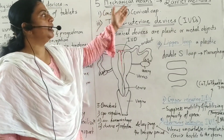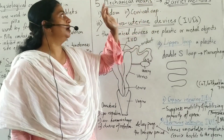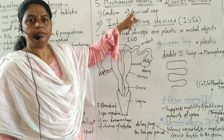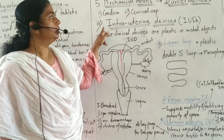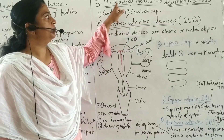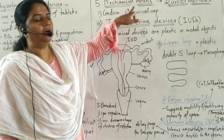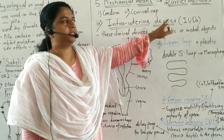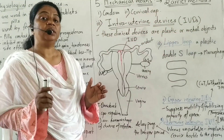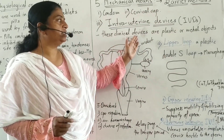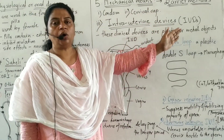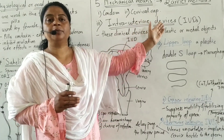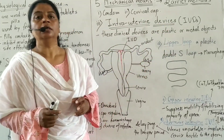The next type of mechanical means or barrier method — in the last lecture, we have seen two types: condom and cervical cap. Here, we will see the third type of barrier method or mechanical means: intrauterine devices, IUDs. These are clinical devices made of plastic or metal objects. This is a surgical instrument.